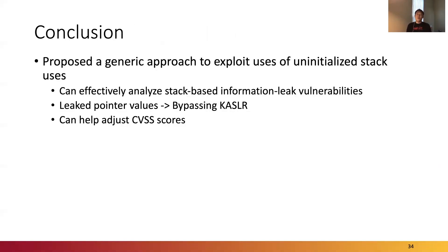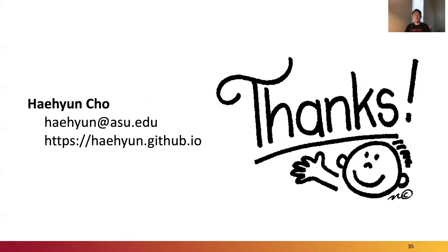In this paper, we proposed a generic approach to exploit uses of uninitialized stack data in Linux kernels to leak kernel pointer values pointing to either kernel functions or the kernel stack. These leaked pointer values can then be used to bypass KASLR and mount future attacks against Linux kernels. Our evaluation results show that we can effectively analyze and exploit stack-based information leak vulnerabilities through the proposed approach, and we expect our findings will help adjust CVSS scoring for information leak bugs inside Linux kernels. Thanks for listening.